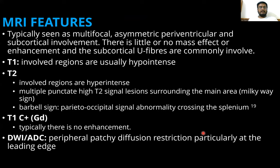MRI features generally show multifocal asymmetric periventricular and subcortical involvement, with little or no mass effect or enhancement, and subcortical U-fibers are commonly involved. On T1-weighted image, involved regions are usually hypo-intense. On T2, regions are generally hyper-intense. Multiple punctate high T2 signal regions surrounding the main area give the Milky Way sign. The barbell sign refers to parieto-occipital signal abnormality crossing the splenium. On T1 contrast, there is no enhancement. On DWI, peripheral patchy diffusion restriction is seen at the leading edge.